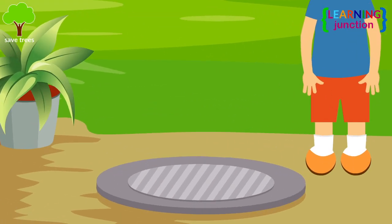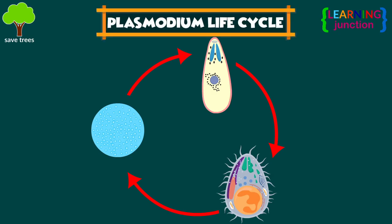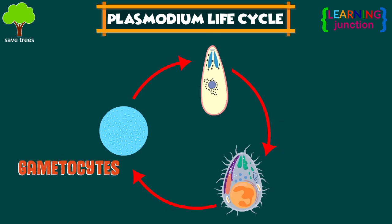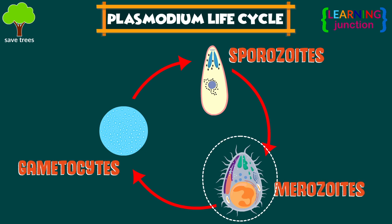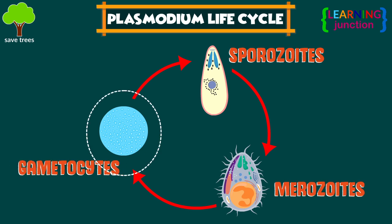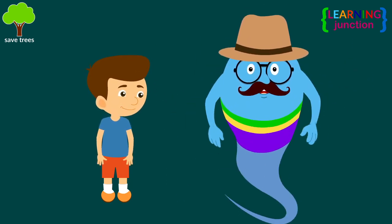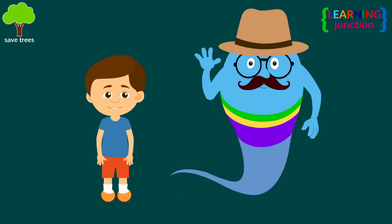Very nice — you have cleaned the dirty water and the drain is covered now! Here's the Plasmodium life cycle chart: the first stage is gametocytes, the second stage is sporozoites, and the third stage is merozoites. Some merozoites develop into gametocytes, and the whole cycle starts again. Now you know a lot about malaria and the life cycle of Plasmodium — stay tuned for more videos, bye bye!